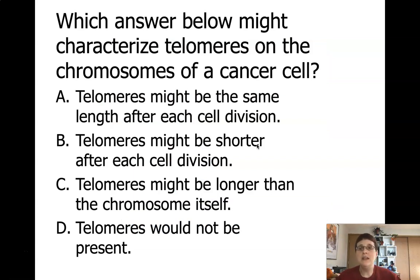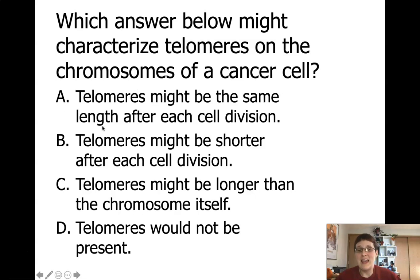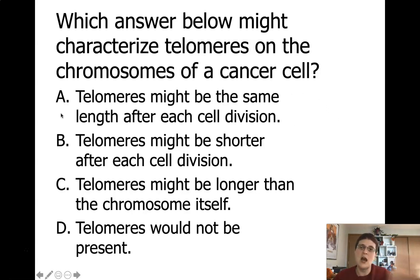Which of these might characterize the telomeres on the chromosomes of a cancer cell? The answer is A. The telomeres are going to generally be the same length after every division because they're going to rebuild them back to the way they were — they might be a little longer, but generally they stay the same length because telomerase comes in and fixes them. B is what happens in a regular, normal cell, because those telomeres are going to get shorter with every division.